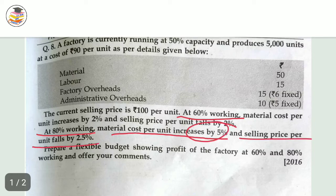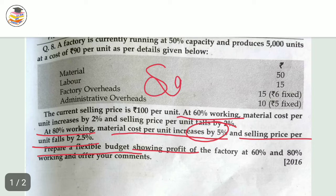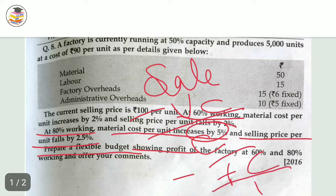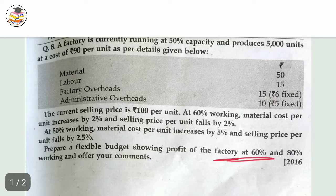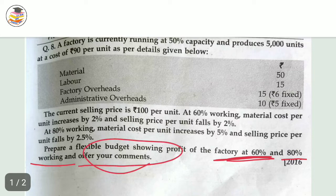You have to prepare a flexible budget showing profit — that is, first sale, then minus variable cost, then your contribution, then minus fixed cost, then your profit at the last. You have to prepare this in this format for 60% capacity and 80% working, and you also have to offer your comment. The question is clear.